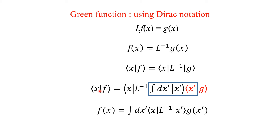We introduce the identity operator as the outer product integral over |x'⟩⟨x'| dx', which equals unity and does not change our physics. We can rewrite this as ⟨x|L-inverse|x'⟩ times G(x'), because ⟨x'|G⟩ is the x-prime representation of G, which can be written as G(x'). The new relation is F(x) = ∫ dx' ⟨x|L-inverse|x'⟩ G(x'), from the Dirac notation, where G(x') is G represented by x prime.